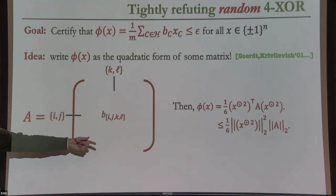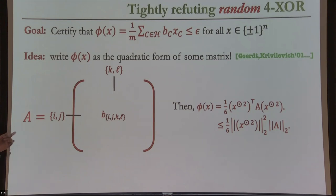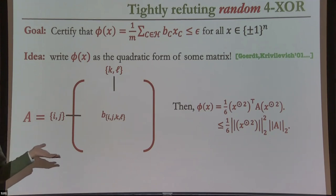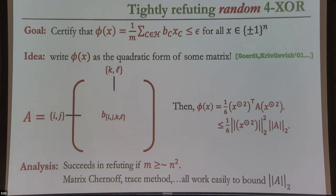Since X is ±1, X^{⊗2} is also a ±1 vector, so its squared L2-norm is simply N-choose-2. I can upper bound the quadratic form by the spectral norm of the matrix times N-choose-2. Everything reduces to understanding when this spectral norm is small enough to give a non-trivial refutation. You can apply matrix Bernstein inequality, the trace method — essentially everything you throw at it works — and confirm that as long as M is at least N^2 you get a non-trivial refutation.